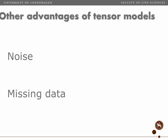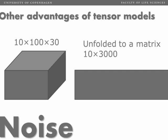Let's take a look at two other aspects of PARAFAC modeling: the noise properties and how we can handle missing data. Here's an example data array—a three-way array which is 10×100×30.